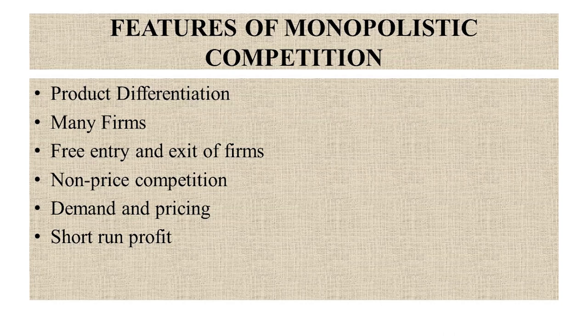The next feature is demand and pricing. Each firm in monopolistic competition faces a downward sloping demand curve for its product due to product differentiation. This allows firms to have some degree of pricing power, meaning they can set prices above marginal cost. However, they must consider the price elasticity of demand and the competitive responses of other firms in the market.